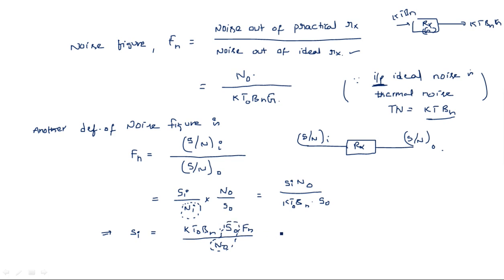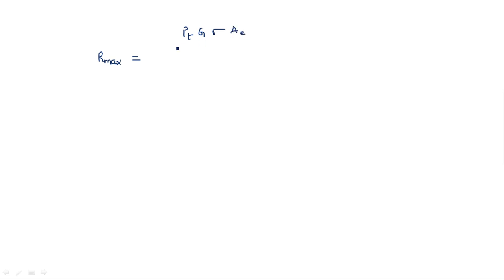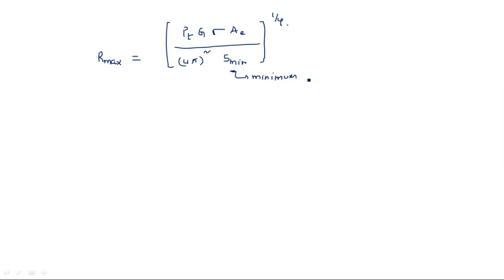Taking S₀/N₀ as a separate factor, Si = KT₀BN × Fn × (S/N)₀. Here Si is the input signal present at the receiver. Now, coming to the maximum radar range equation: Rmax = [Pt·G·σ·Ae / (4π)² · Smin]^(1/4), where Smin is the minimum detectable signal.